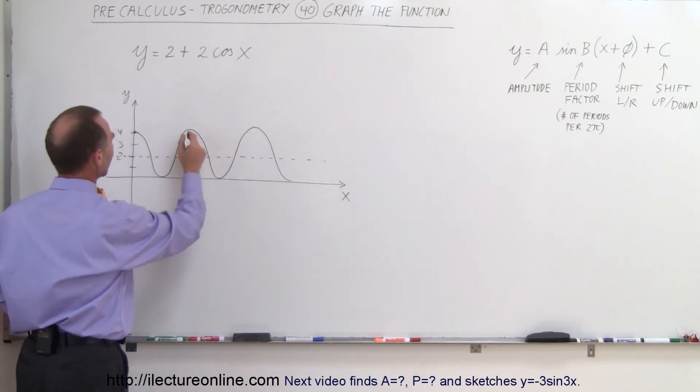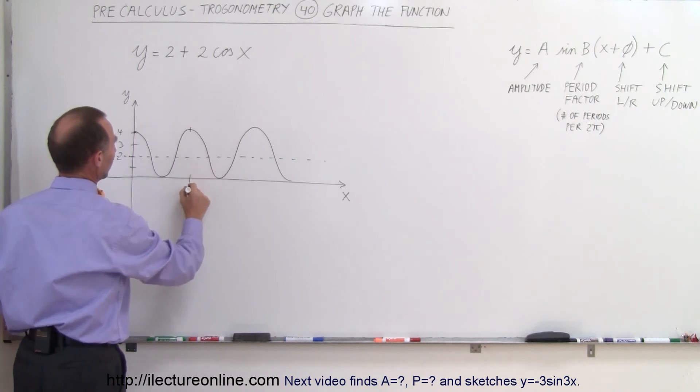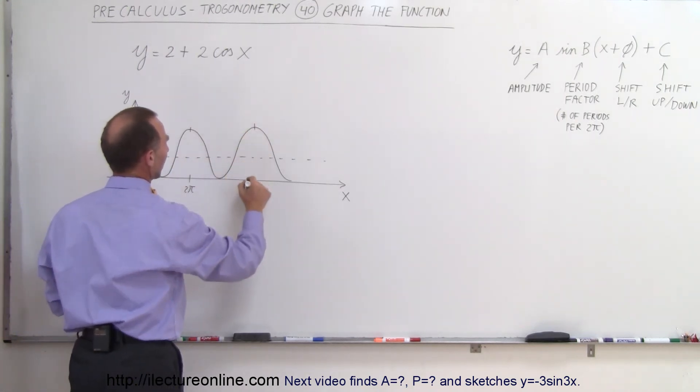And a complete period will go from there to there, so this is 2 pi on the axis and another complete period that makes that 4 pi on the axis right there.